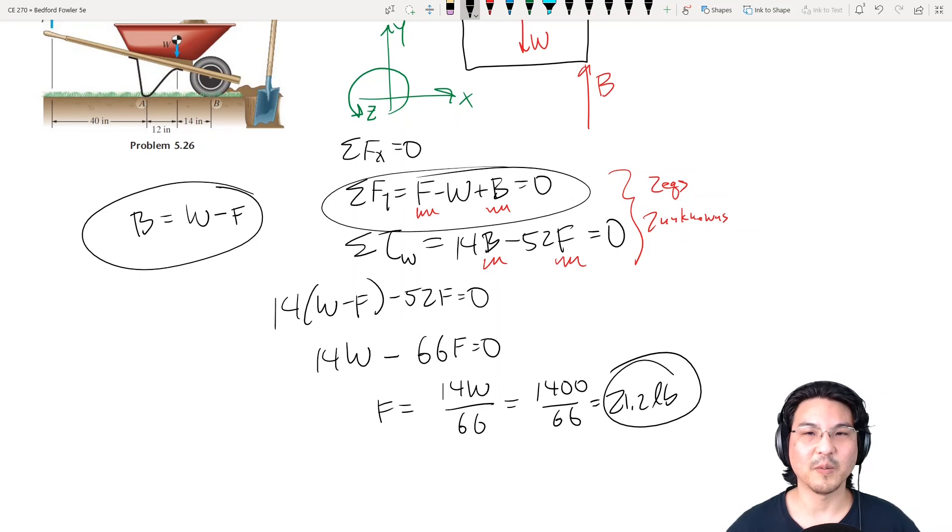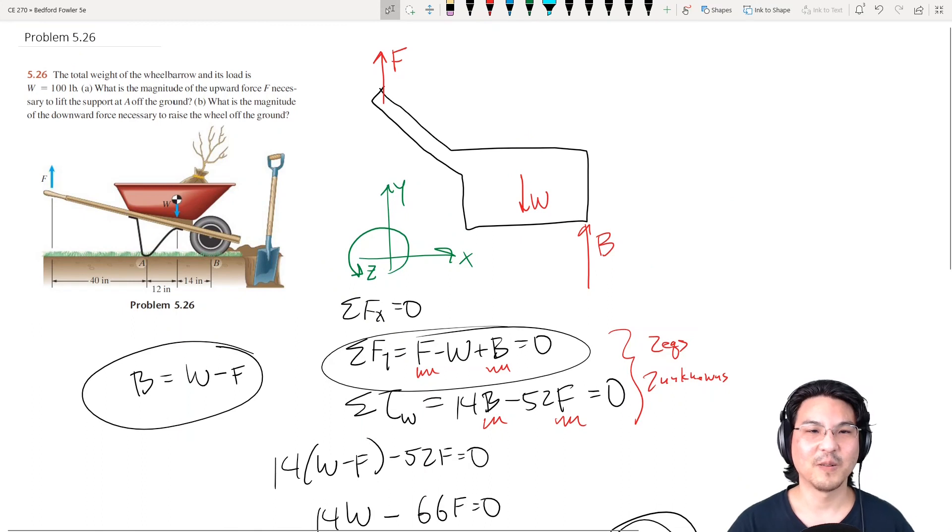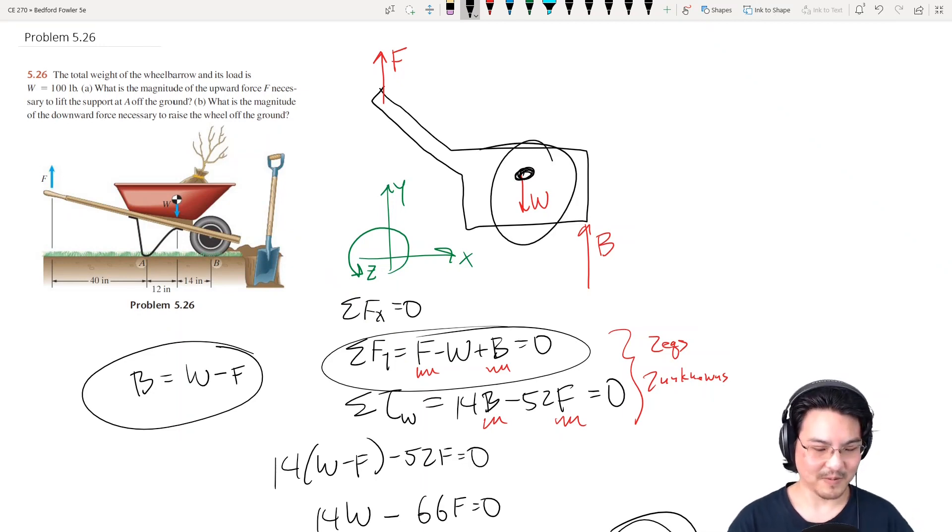Okay, so no matter what choice for when you sum torque, you're going to get the same solution. But notice some choices were easier than others. And the strategy is to pick a point where you can get rid of unknowns. So where there's the most unknown. So if I pick a point here, that's not unknown. So it's like lost opportunity.